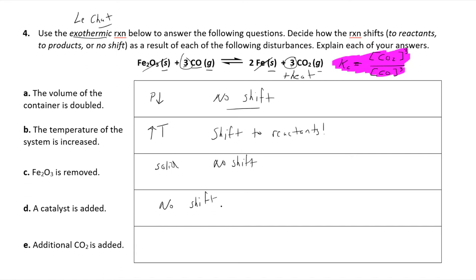Finally, if you're adding carbon dioxide — carbon dioxide is a product — so if we add carbon dioxide we will shift to the reactants. Very simple. I hope this has helped. This is a very good representation, except for maybe problem two, of the types of questions you should be able to answer on an exam. I'll see you very soon.